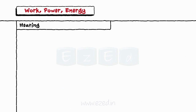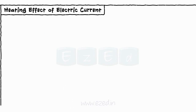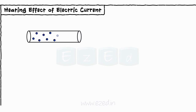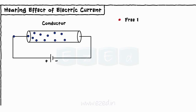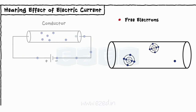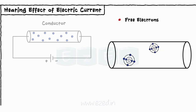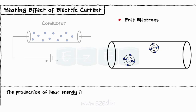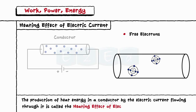Now let's study the heating effect of electric current. Every metallic conductor has free electrons available for the conduction of current. When voltage is applied across a conductor, these free electrons start their motion towards the positive terminal of the voltage source, constituting the flow of current. These moving electrons collide with the atoms of the metal. At each collision, a part of the kinetic energy of the electron gets converted into heat, and slowly the temperature of the conductor begins to rise. Thus, the production of heat energy in a conductor by the electric current flowing through it is called the heating effect of electric current.